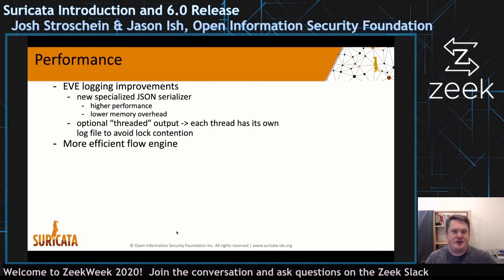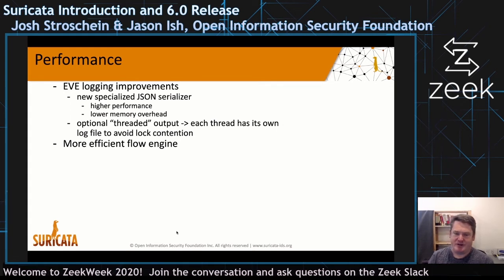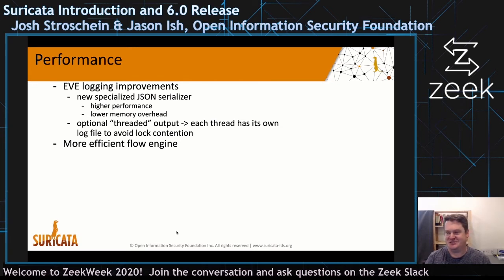For performance this round, the focus was mainly on the EVE logging output. We use a new specialized JSON serializer rather than a library — we found it to be quite a bit faster with lower memory overhead. It's specialized to our specific use case and has no JSON parsing ability.